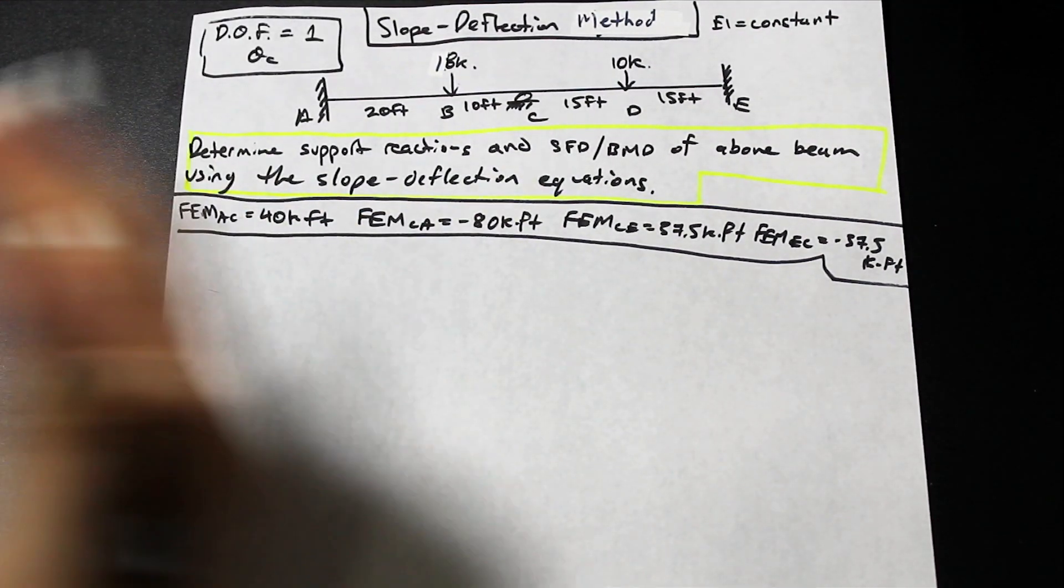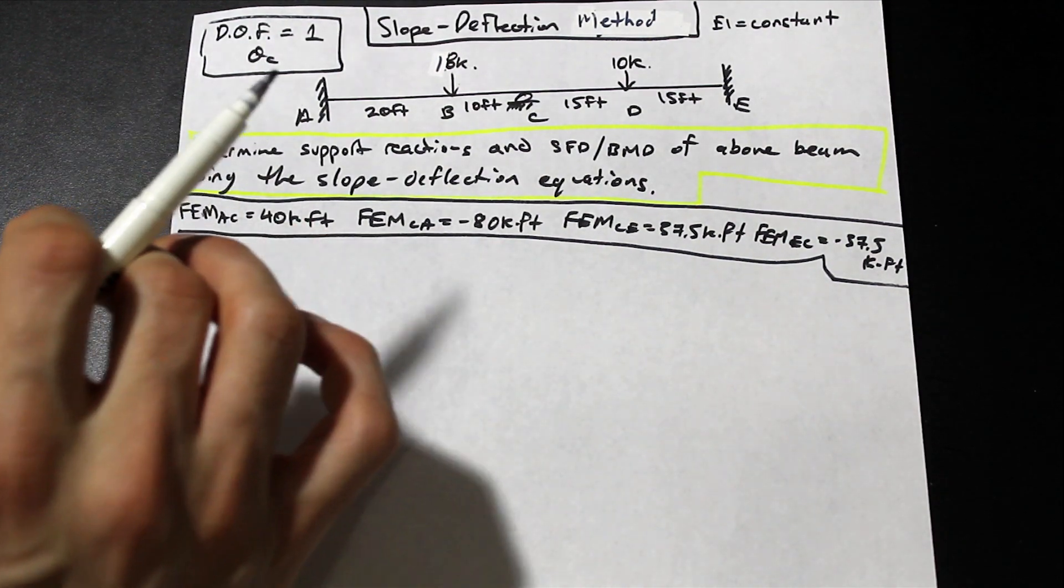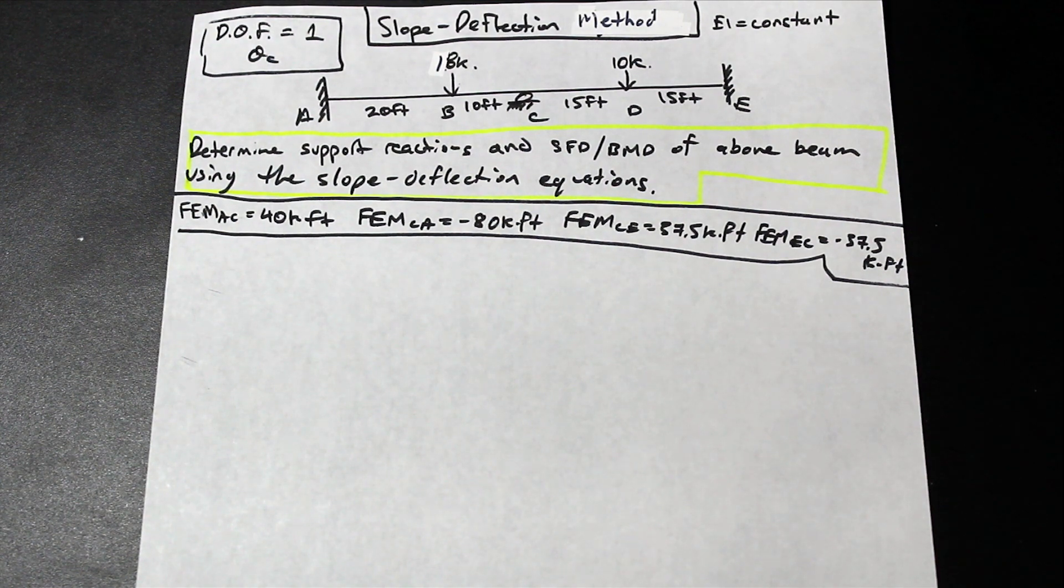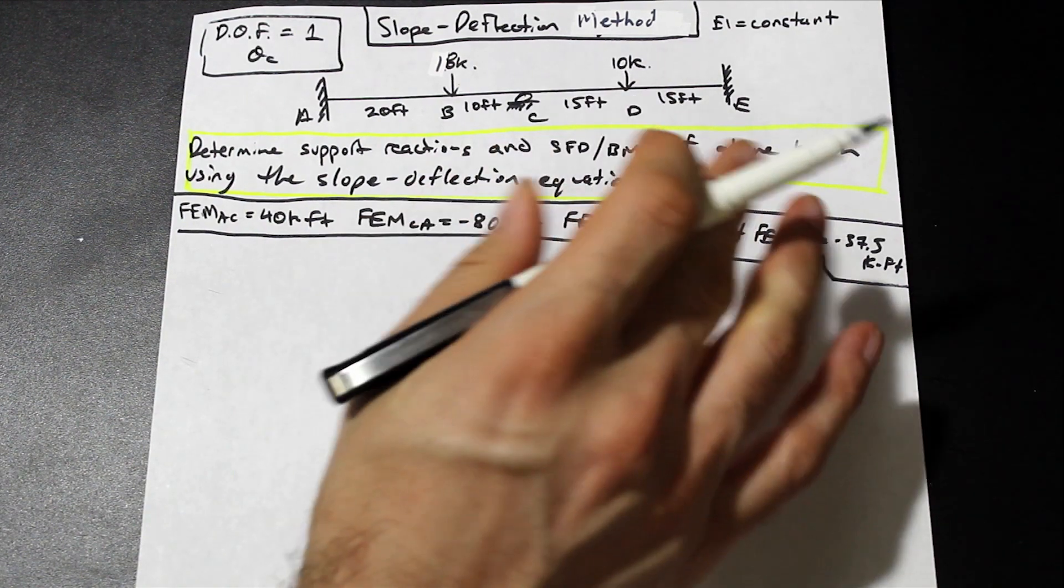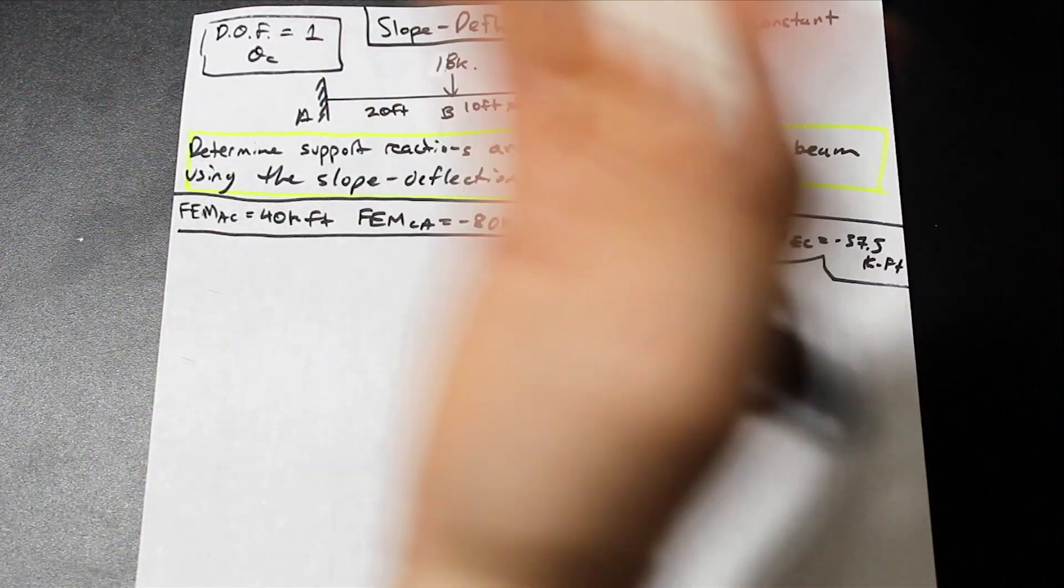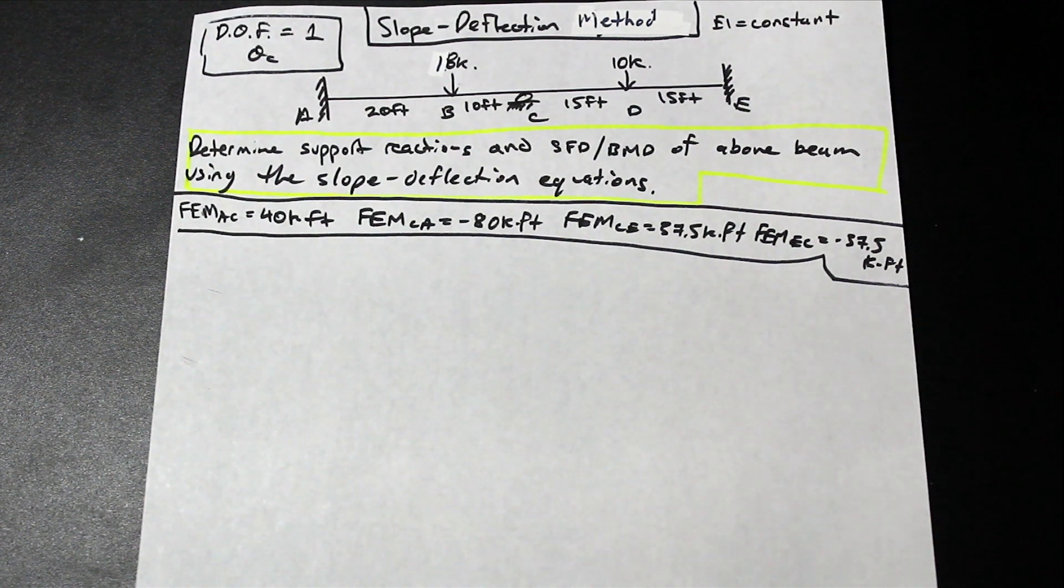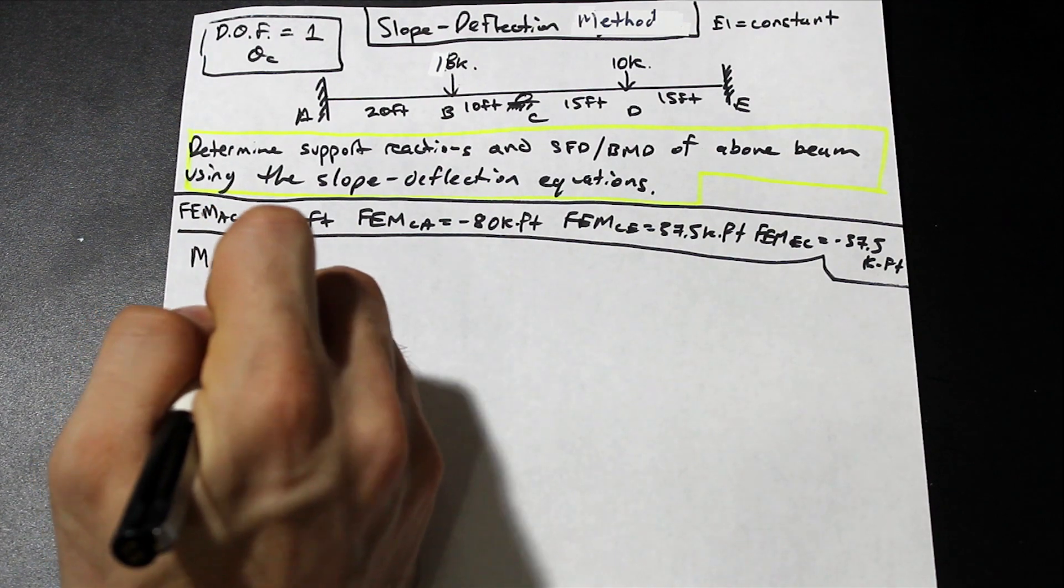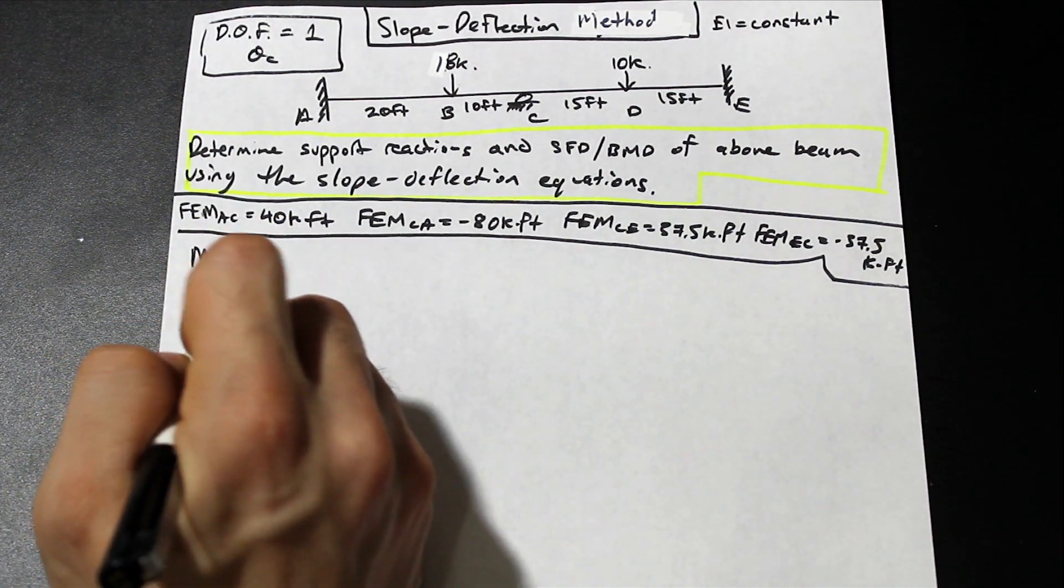All right, so after we've found the fixed-end moments, and after we've identified our degrees of freedom, what we're going to do is we're going to start to apply the slope deflection equations. So the slope deflection equations, I'm going to write them out, and you're going to need to apply those to each section of the beam, so section AC and section CE, so that means you're going to have four equations. Let's go ahead and let's begin writing out the first one, which is going to be MAC. So we have MAC, and we're also going to have MCA.